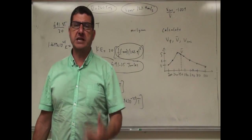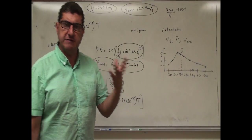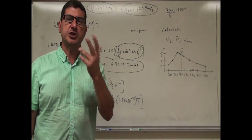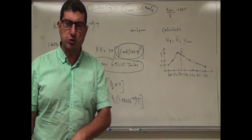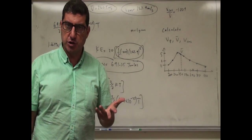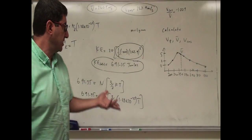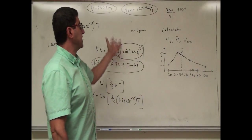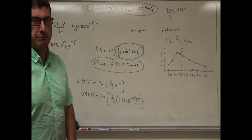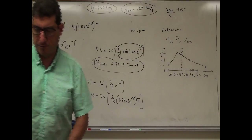So this was a good example of calculating V_probable, V_average, and V_root-mean-square, showing which one is larger, demonstrating that root mean square is always the largest, and then using it to find kinetic energy and temperature. Thank you very much.